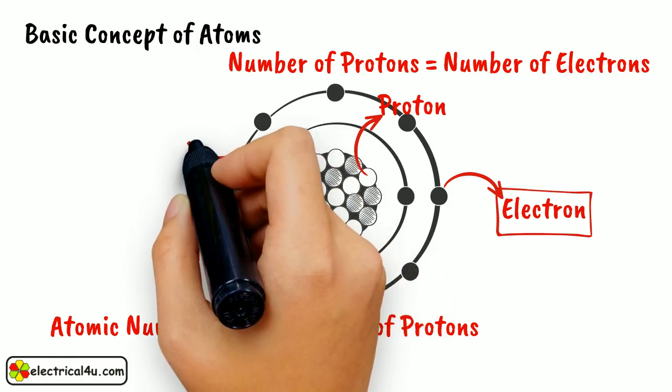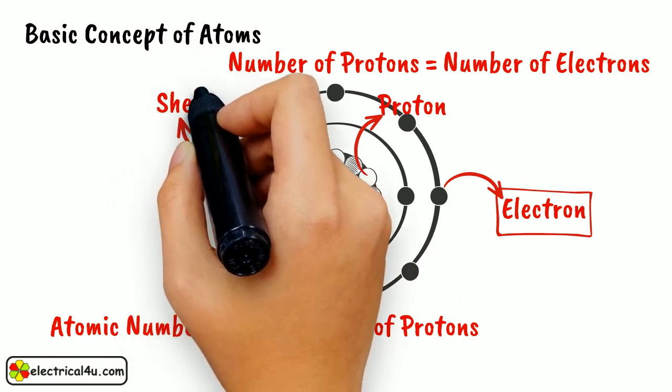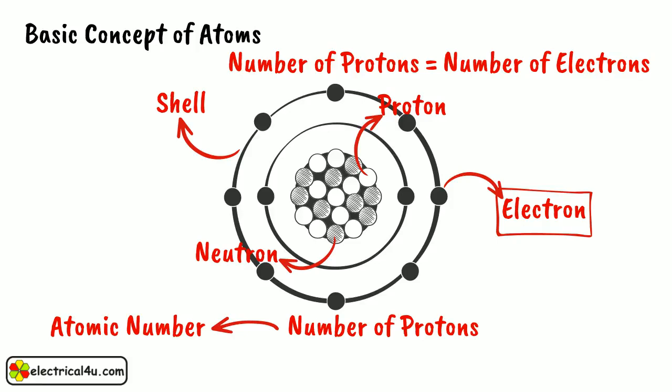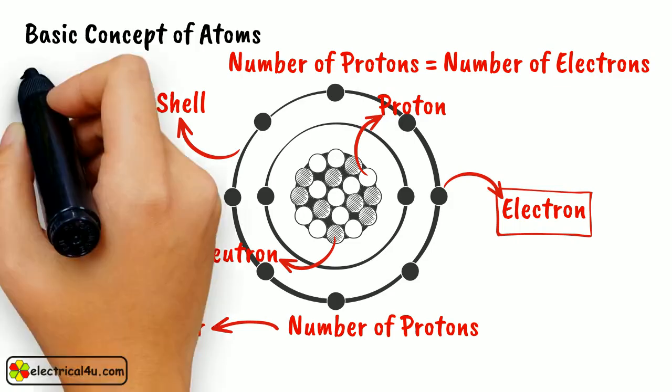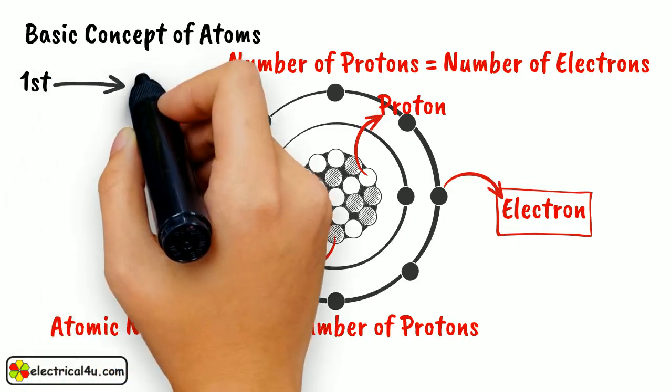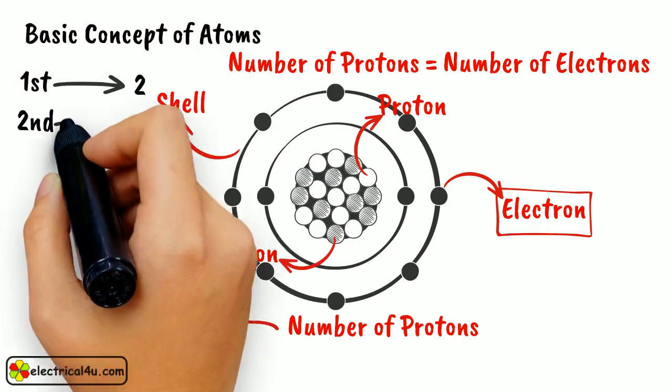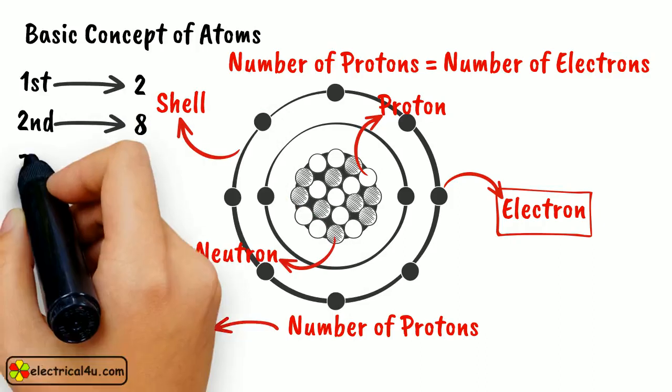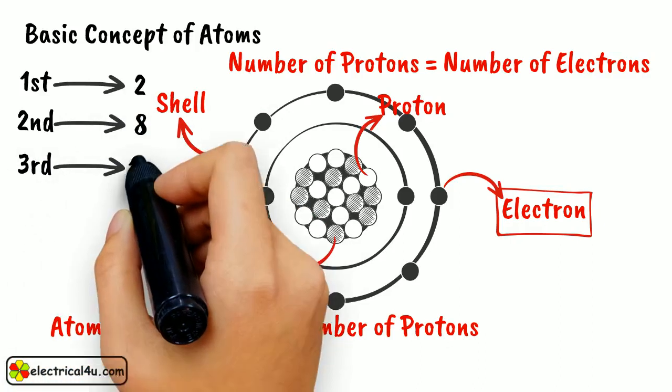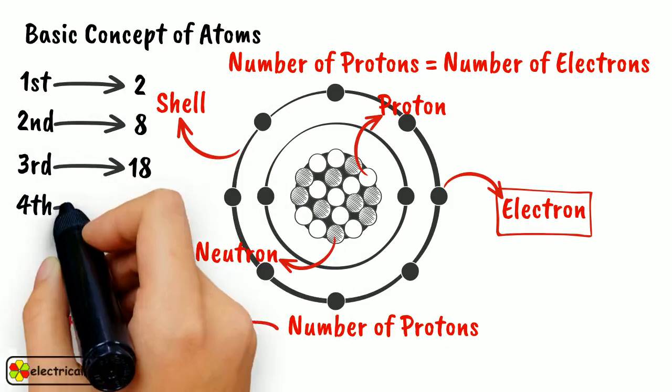Electrons travel around the nucleus of the atom in an area known as a shell. Shells are layered outward from the nucleus. Each shell can hold up to a maximum number of electrons. The innermost shell can hold 2 electrons, the second shell can hold 8, the third shell can hold 18, and the fourth can hold 32.